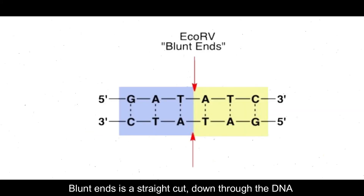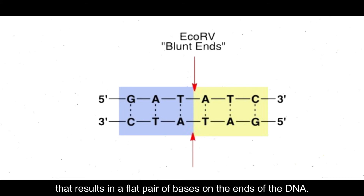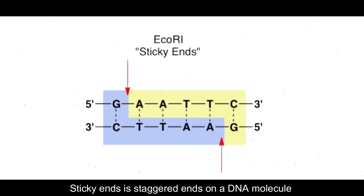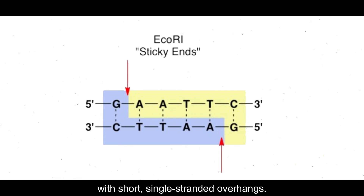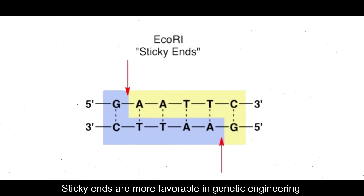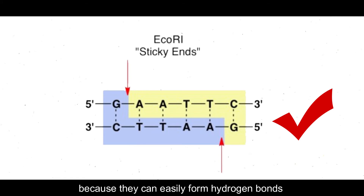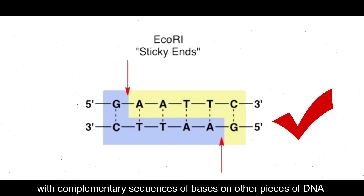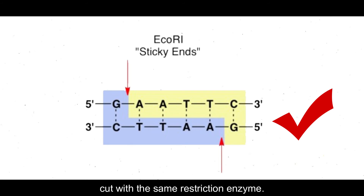A blunt end is a straight cut down through the DNA that results in a flat pair of bases on the ends of the DNA. A sticky end is a staggered end of a DNA molecule with short single-stranded overhangs. Sticky ends are more favorable in genetic engineering because they can easily form hydrogen bonds with complementary sequences of bases on other pieces of DNA cut with the same restriction enzyme.